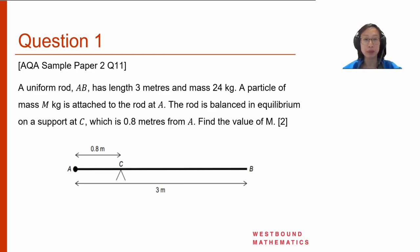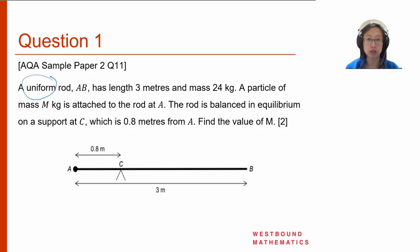Question 1 was taken from the AQA Sample Paper 2, Question 11. It says that a uniform rod AB has length 3 metres and mass 24 kg. A particle of mass m kg is attached to the rod at A. The rod is balanced in equilibrium on a support at C, which is 0.8 metres from A. Find the value of m. As before, I'll draw a force diagram. Since the rod is uniform, the weight of the rod acts vertically downwards from its midpoint, which is 1.5 metres from each end.